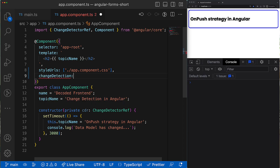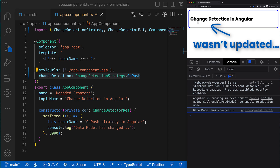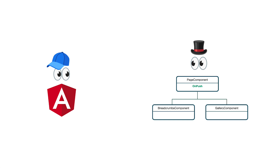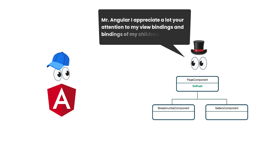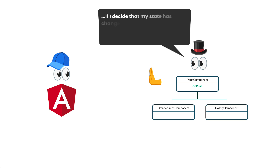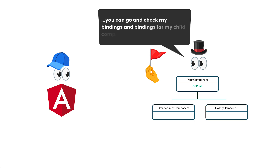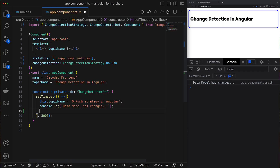To reduce unnecessary work, there exists the OnPush change detection strategy, which you can activate for every component by setting the changeDetection property to OnPush. After that, the view isn't being updated anymore. Basically, a component with OnPush says to Angular: 'Please don't check my bindings or my children's bindings until I explicitly give you a sign. If I decide my state has changed, I'll raise a red flag, and during the next change detection cycle you can go and check my bindings.'